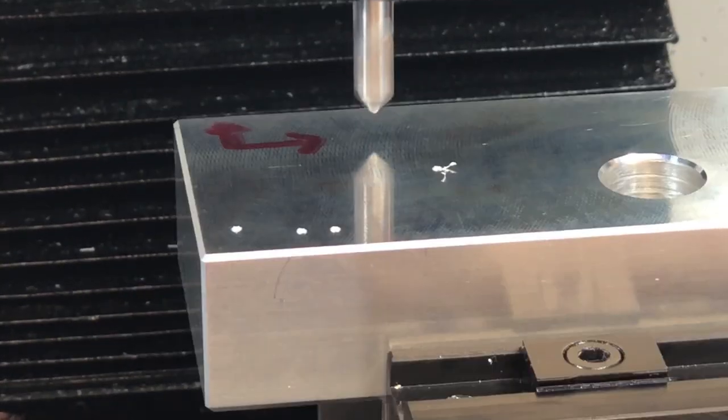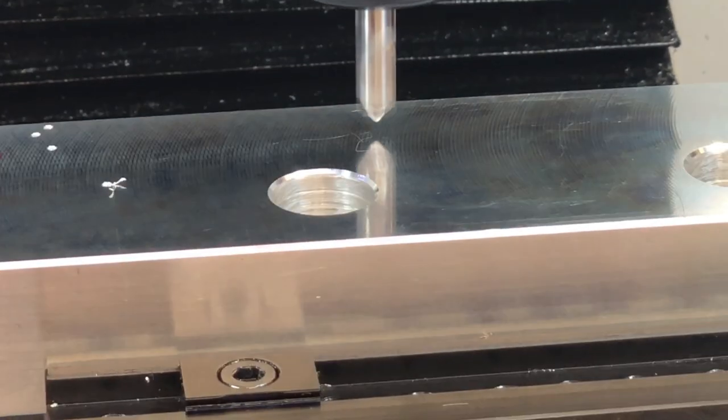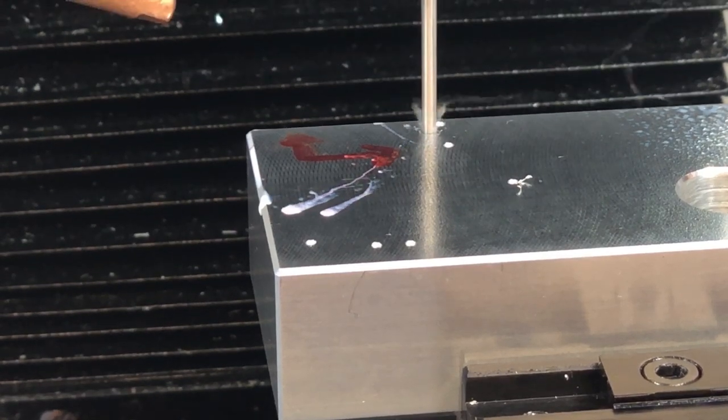Because we are unable to make sharp corners inside of a pocket with an end mill, we have to remove the material from the corners using a drill.